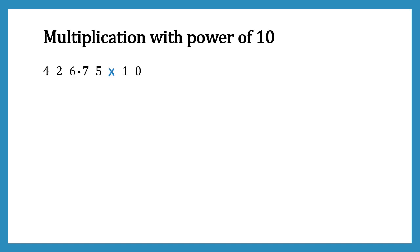Here I have taken the same number 426.75 and we're going to multiply it by 10. 10 is 10's power 1 because it contains one zero. Whenever we multiply a decimal number by a power of 10, we simply shift the decimal point to the right by as many places as the power. Since 10 is 10's power 1, we shift the decimal point one place to the right, and our result becomes 4267.5.